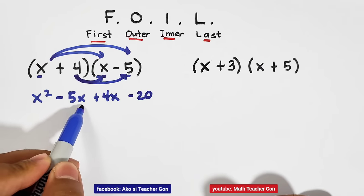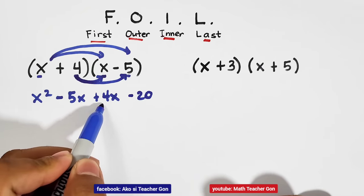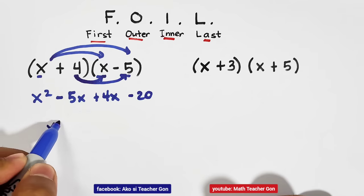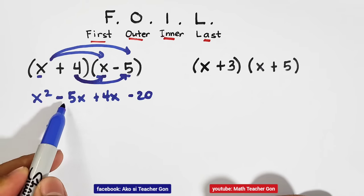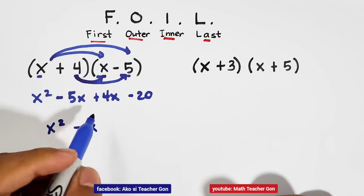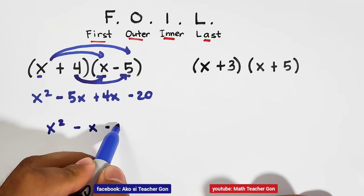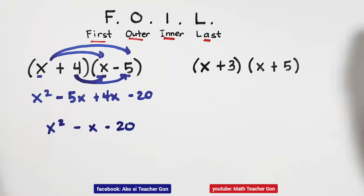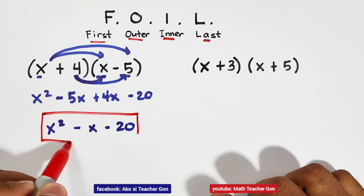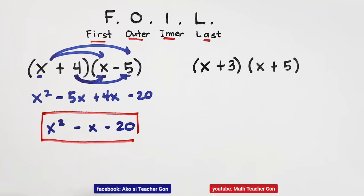Like this one. We have negative 5x and 4x. So we will copy x squared. And as we add negative 5x and 4x, that would give us the answer of negative x. And then copy minus 20. And this is now the answer for the product of the two given binomials. As we multiply them using the FOIL method, we have x squared minus x minus 20.